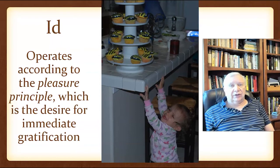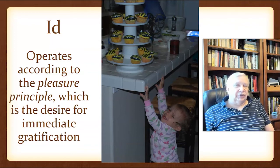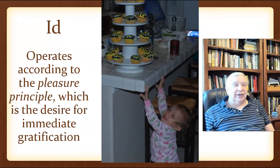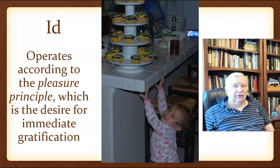Here's a prime example of id-driven behavior. Here is my second granddaughter, Ava, and it's her birthday. My wife Vicki made these lovely cupcakes. It's really hard telling a young child that they can't have the really cool cupcake — they have to eat dinner first. You can see that she's a little bit agitated that she can't have exactly what she wants.